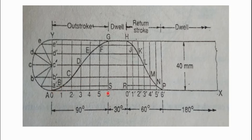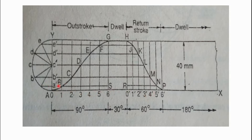Divide the outer stroke angle of 90 degrees into an even number of equal parts — say 6 equal parts. Similarly, divide the return stroke into the same equal number of parts. Also divide the stroke length of the floor on the y-axis into the same number of equal parts as the outer stroke and return stroke.